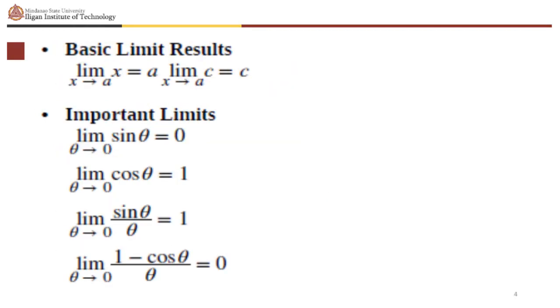Some basic limit results that you should remember. The limit of sine theta as theta approaches 0 is 0. The limit of cosine theta as theta approaches 0 is 1.